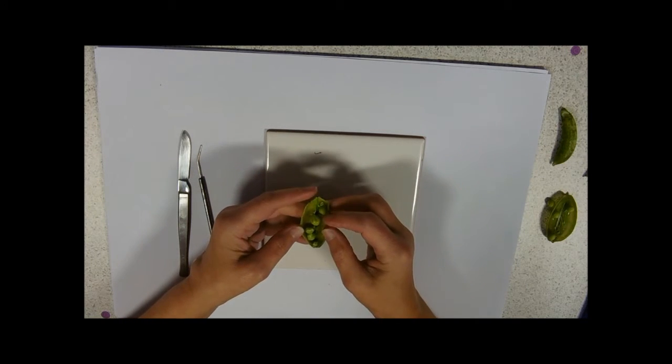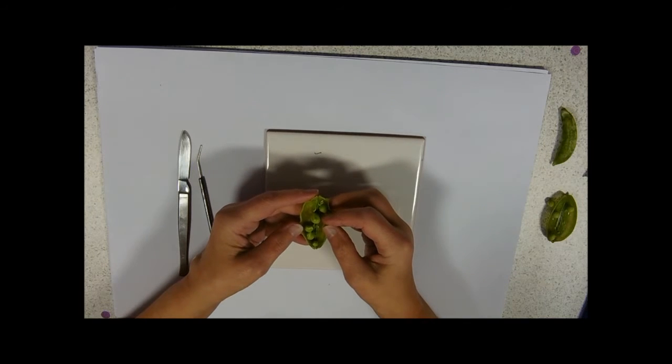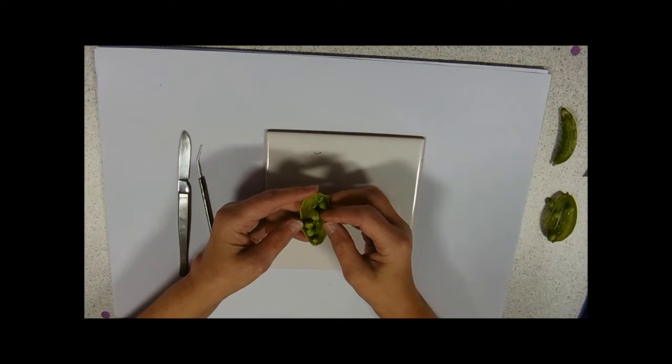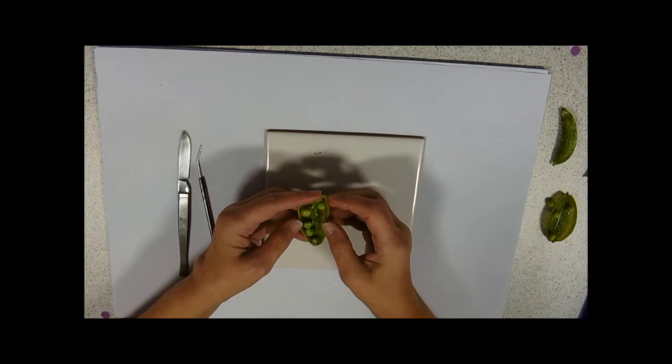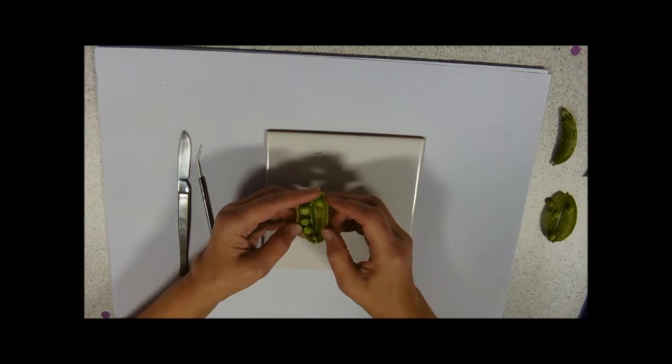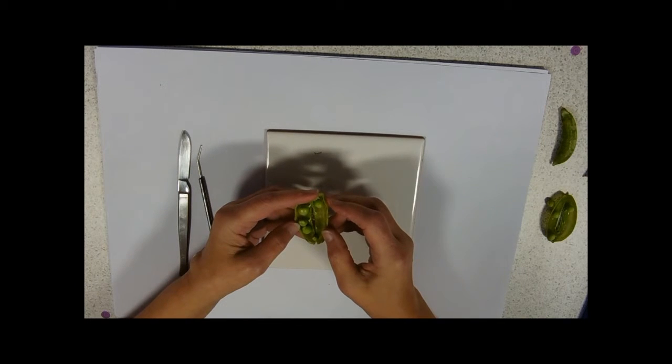The pea seed has developed from the ovule. The ovule consisted of an embryo sac with the nuclei in it, and the integuments pierced by a micropyle.